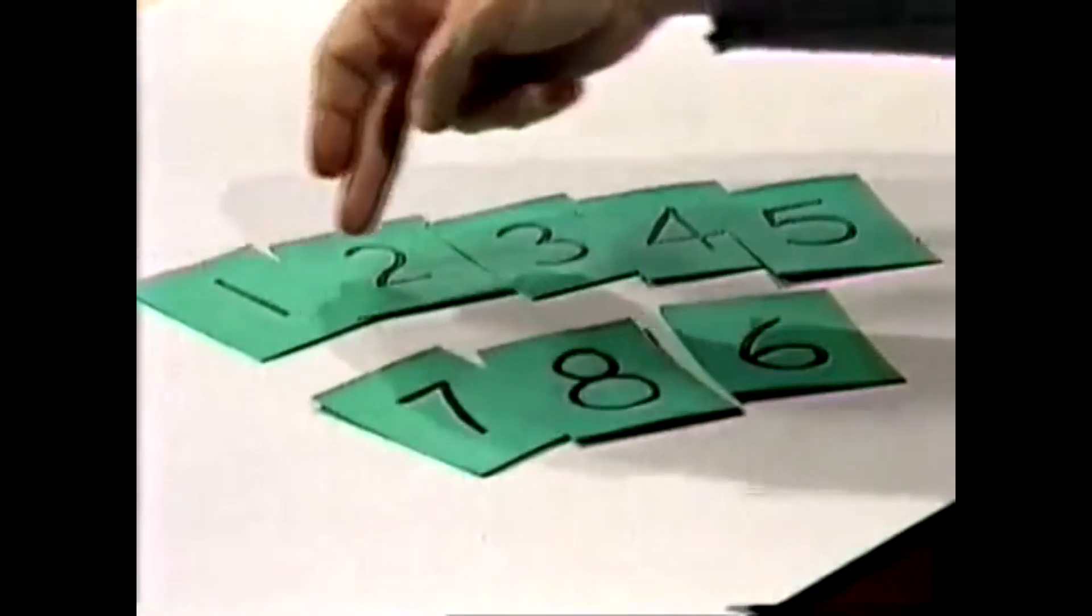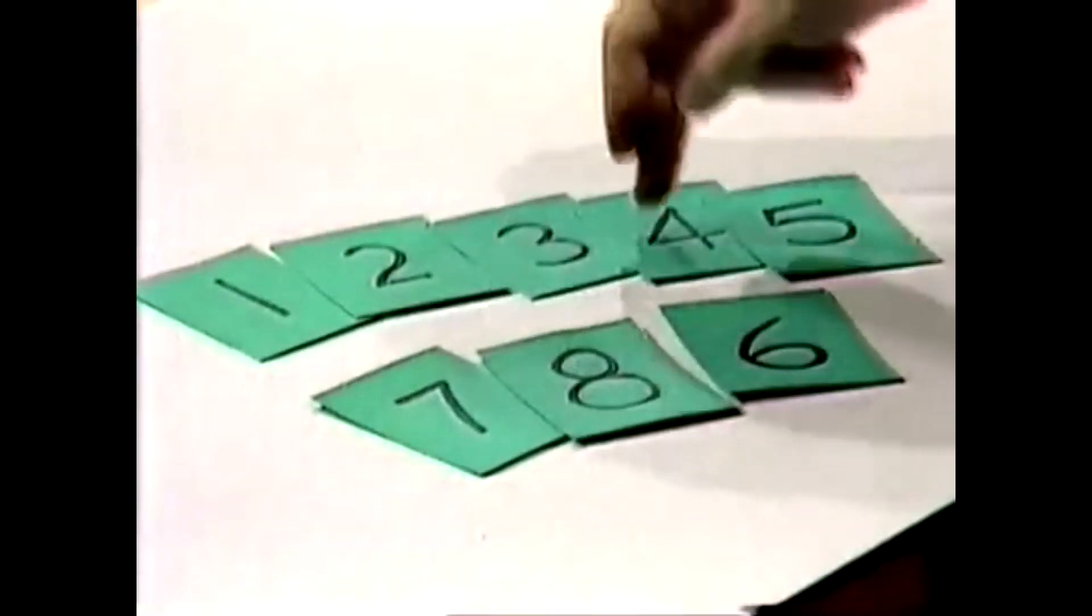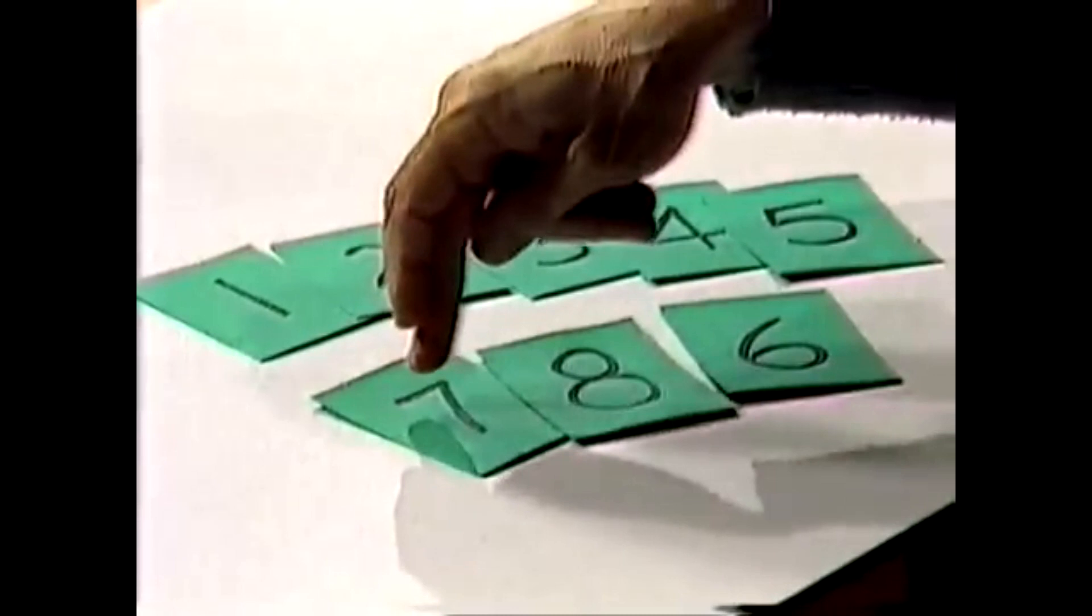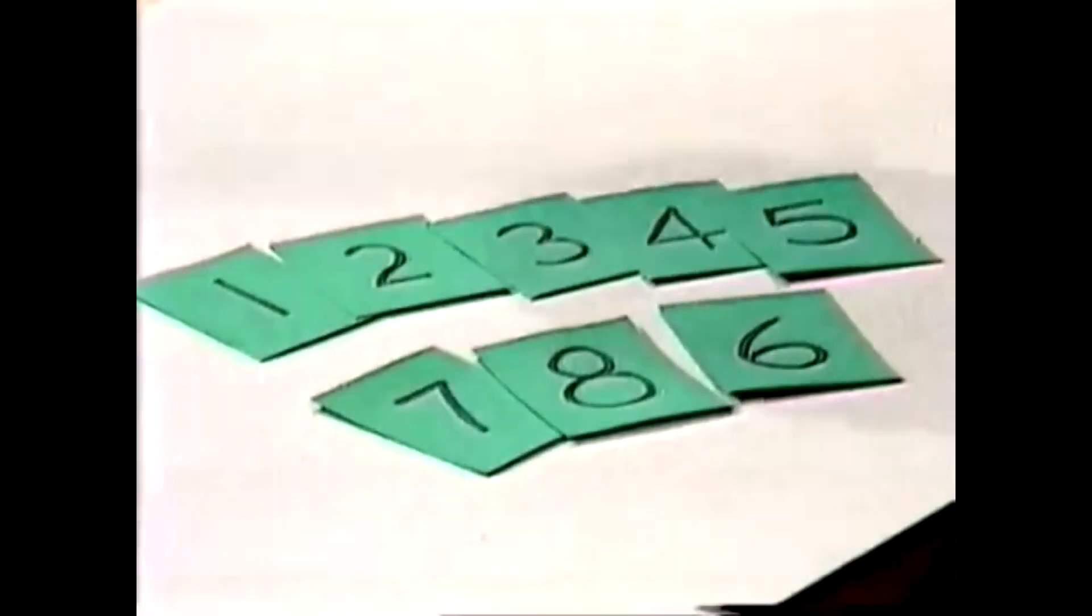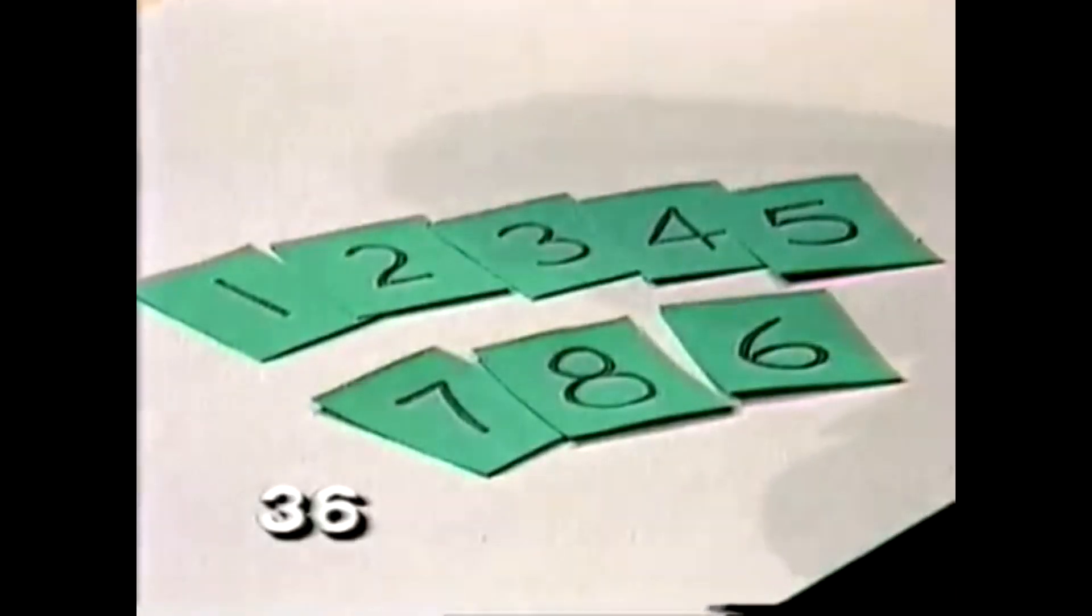Let's check the total this time. One and two is three, and three is six, and four is ten, and five is fifteen, and seven twenty-two, and eight thirty, plus six, thirty-six. Thirty-six of course is an even number, and you know as well as I do that thirty-six divided by two makes eighteen.